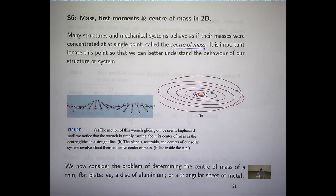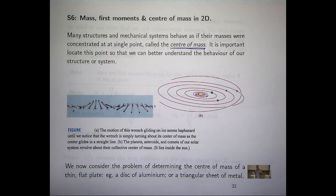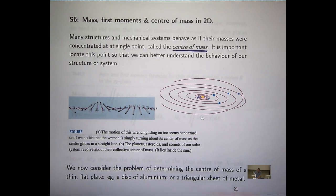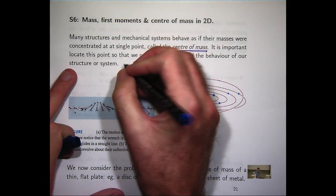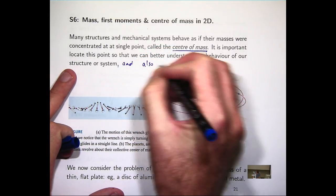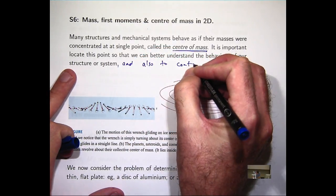If I've got a piece of paper or something I want to balance, I'd need to put my finger at the center of mass for it to balance. It's important to locate this center of mass so we can not only understand the behavior of the system, but also to control it.